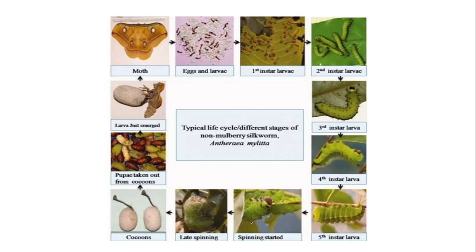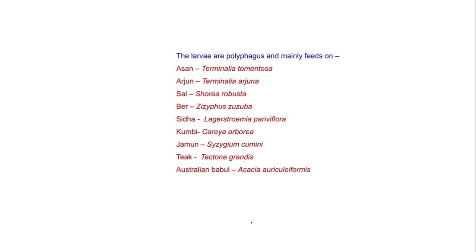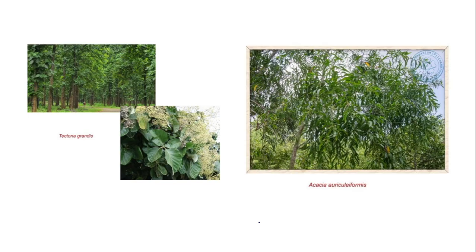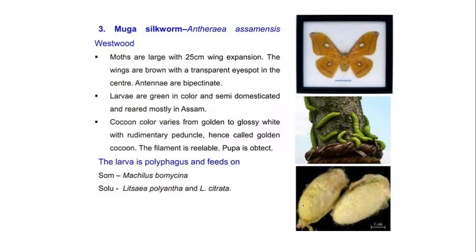This is the tazar silkworm moth adult, larvae, and life cycle. The tazar silkworm is polyphagous and mainly feeds on Terminalia tomentosa, Terminalia arjuna, Syzygium cumini, Shorea robusta, Ziziphus jujuba, Lagerstroemia parviflora, Tectona grandis, and Acacia auriculiformis.